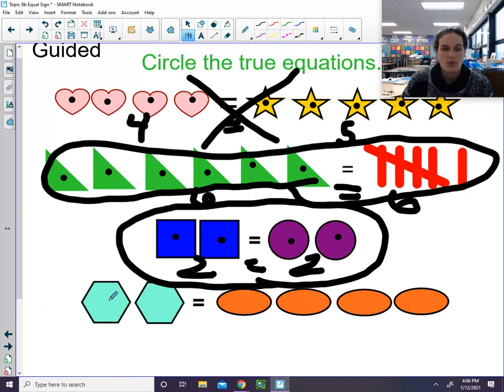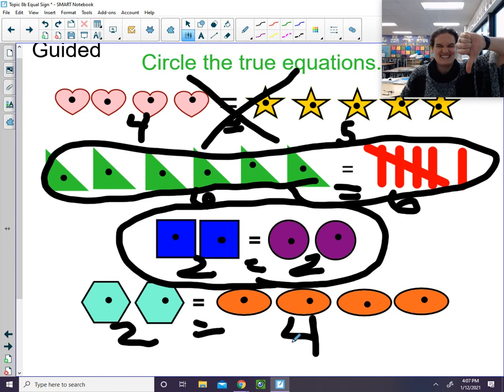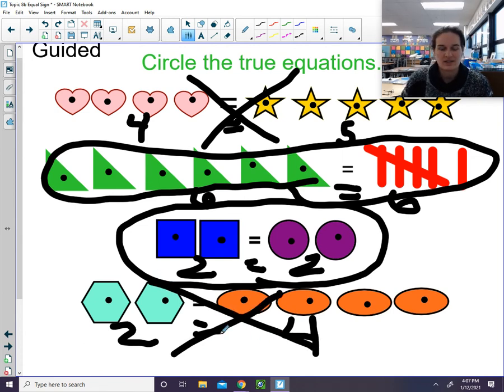Last one. One, two equals one, two, three, four. Does two equal four? You decide. Is it a true equation or not? It is not a true equation. Two is not the same as four. Let's cross that off.